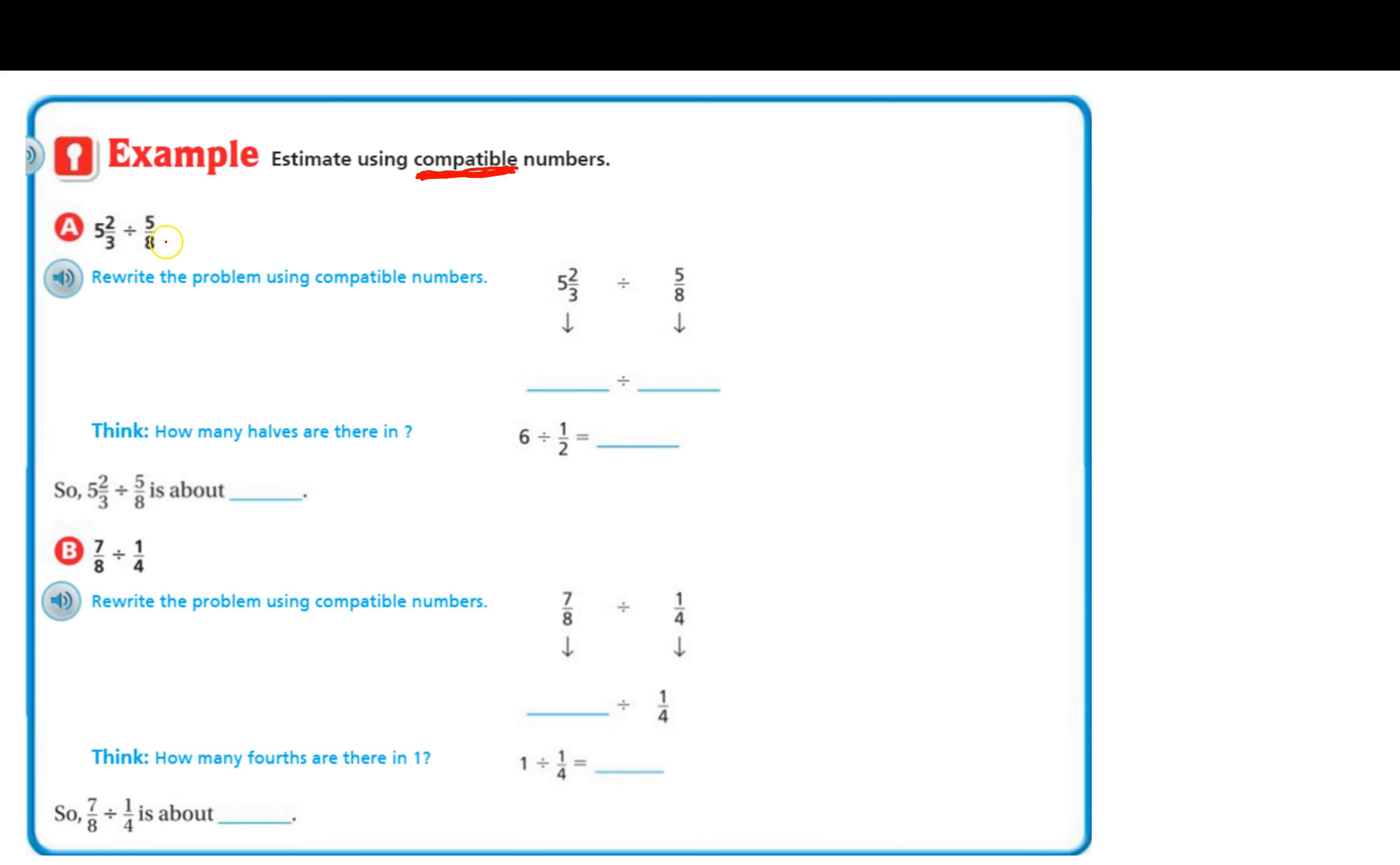So we have 5 and 2/3 divided by 5/8. So 5 and 2/3, that would be 5.66 and that would be a repeating decimal if we wrote it as a decimal. So that's going to be closer to six wholes.